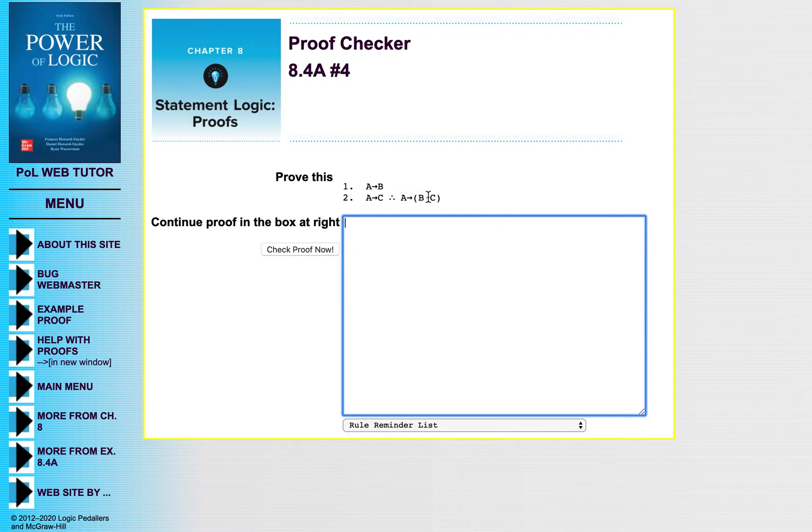The first thing that you look for, why are we gonna do a conditional proof on this one? Well, the main reason is because I look at the conclusion and it's a conditional. So conditional proofs come in handy when you have a conditional for your conclusion. This is saying if A, then B and C. So what we wanna do is assume the antecedent on the left side, assume A.